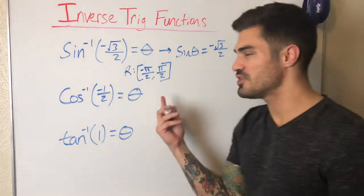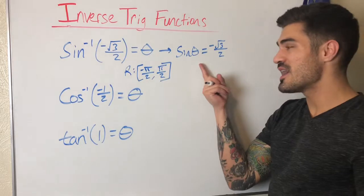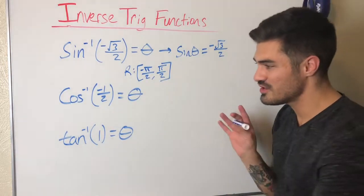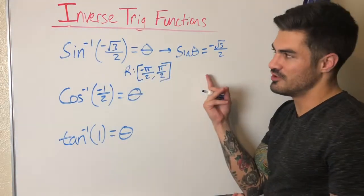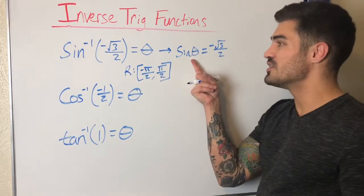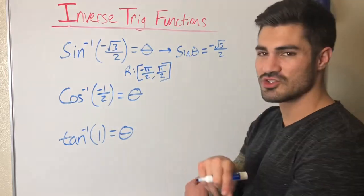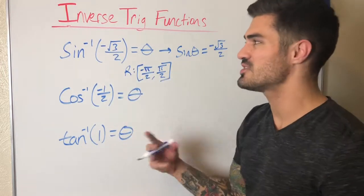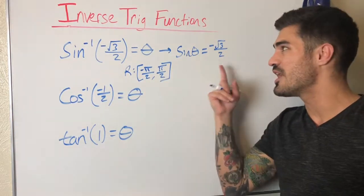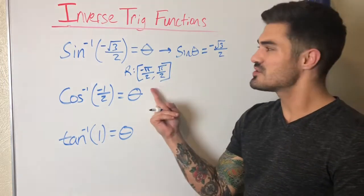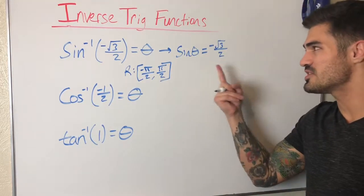Why do we have this restricted range? A quick summary: sine theta is not one-to-one, so we had to restrict the domain on this interval to make it one-to-one, because you can't have an inverse unless you're one-to-one. By doing that, we restricted the domain of sine, which therefore restricts the range of its inverse, since domain and range switch. We just have to remember that — it's honestly the trickiest part of solving these, because it's pretty easy to rewrite and look at the unit circle, but this is where a lot of simple mistakes are made.